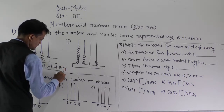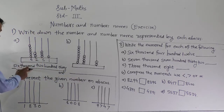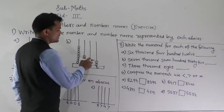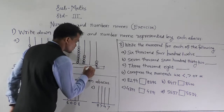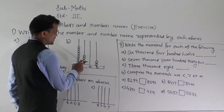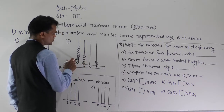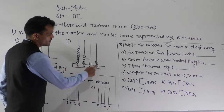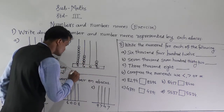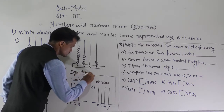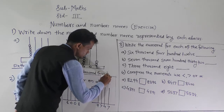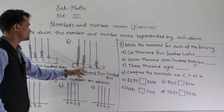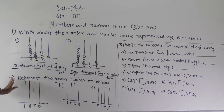Next example: at the ones place, two beads are there; at the tens place, no bead is there, so we write zero; at the hundreds place, four beads are there; and at the thousands place, eight beads are there. So this number is eight thousand four hundred and two.